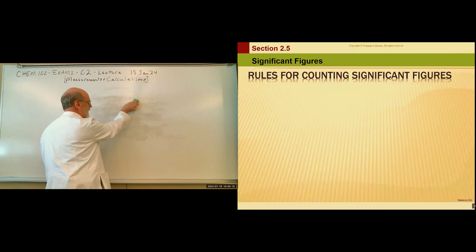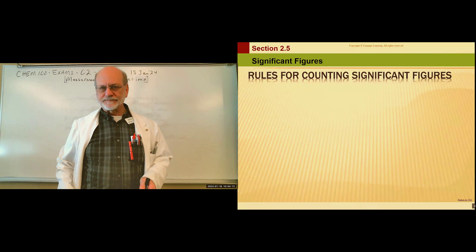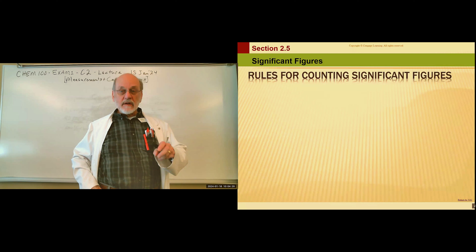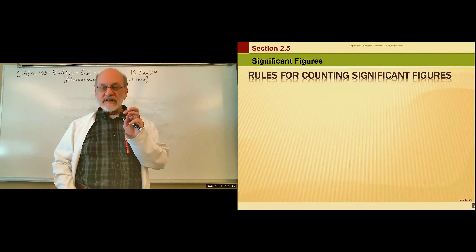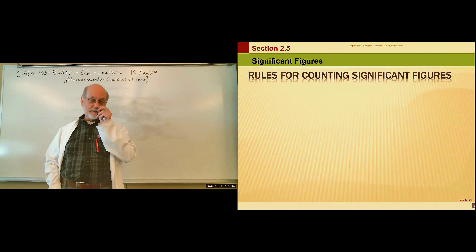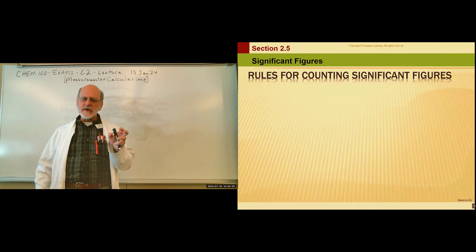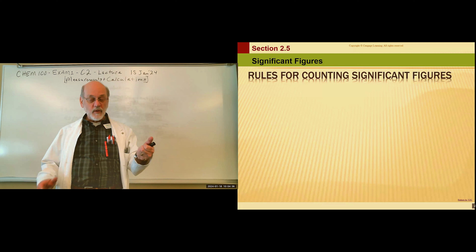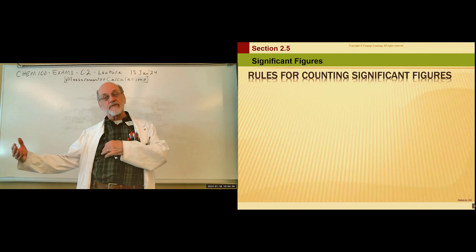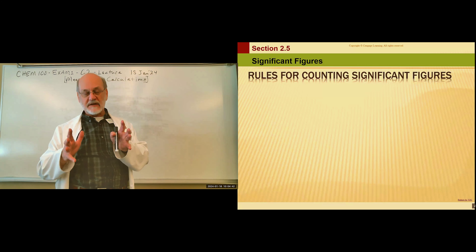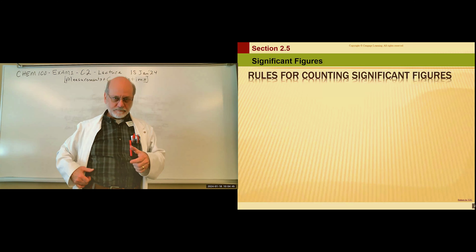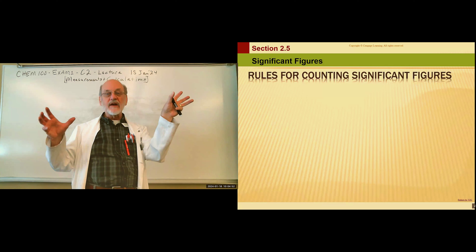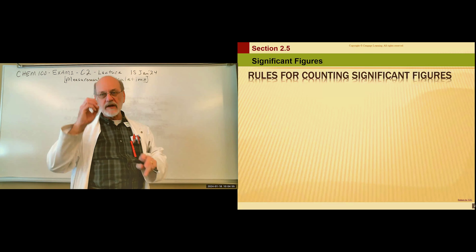Now we've talked about measuring and what we do about the error inherent in every measurement. How do we deal with that when we have to do calculations? If there's uncertainty in every measurement, and you combine those measurements mathematically, we want to know what to expect in terms of uncertainty for the outcome — and that's where significant figures come in.